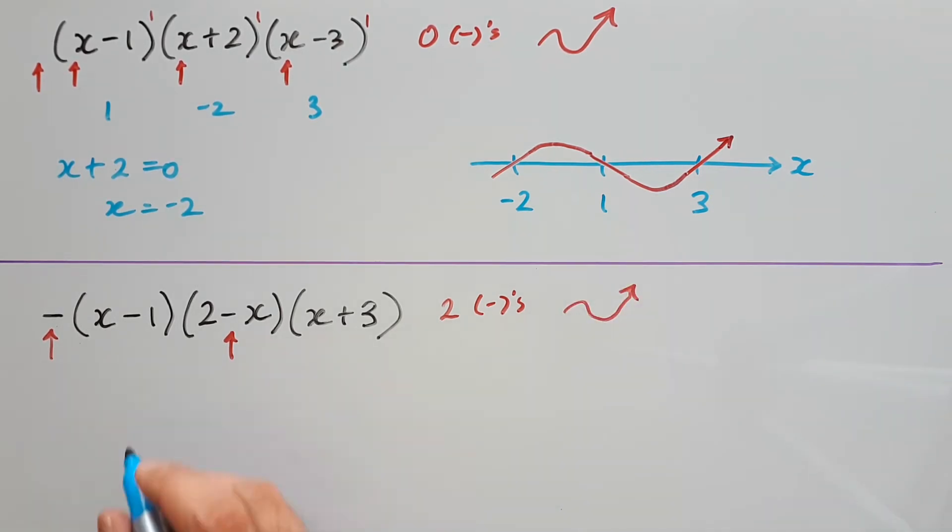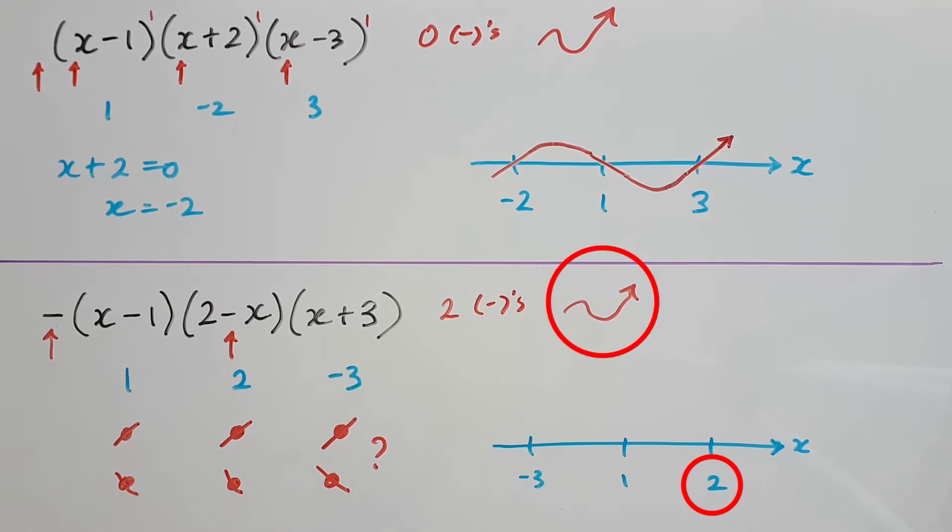Our x-intercepts are 1, 2, and negative 3. The factors are still linear, so the curve is going to pass through each of these intercepts like a straight line. 2 is our rightmost x-intercept, and the curve needs to finish upward through this intercept. So we draw a straight line going up through 2. Following that logic, the line has to go straight down through 1, and the line has to go straight up through negative 3. This makes it possible to connect all of them, without crossing over the x-axis more than 3 times.